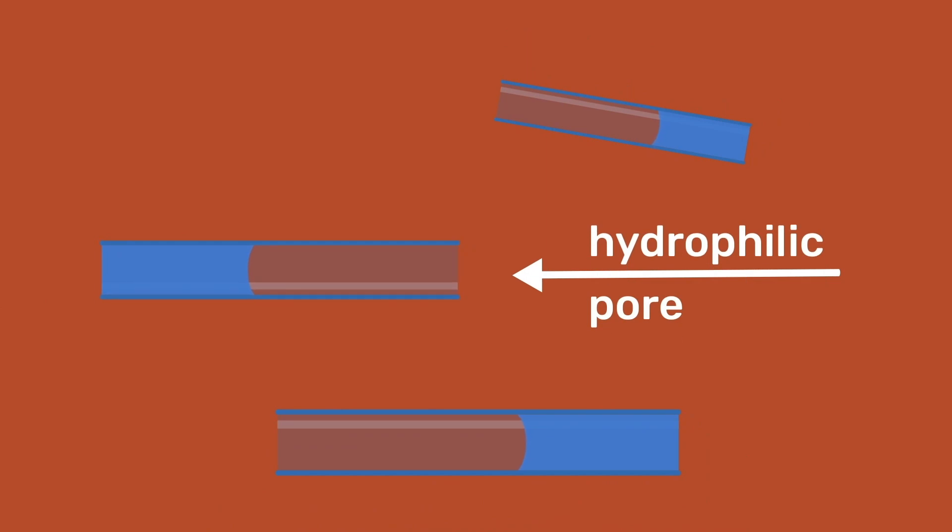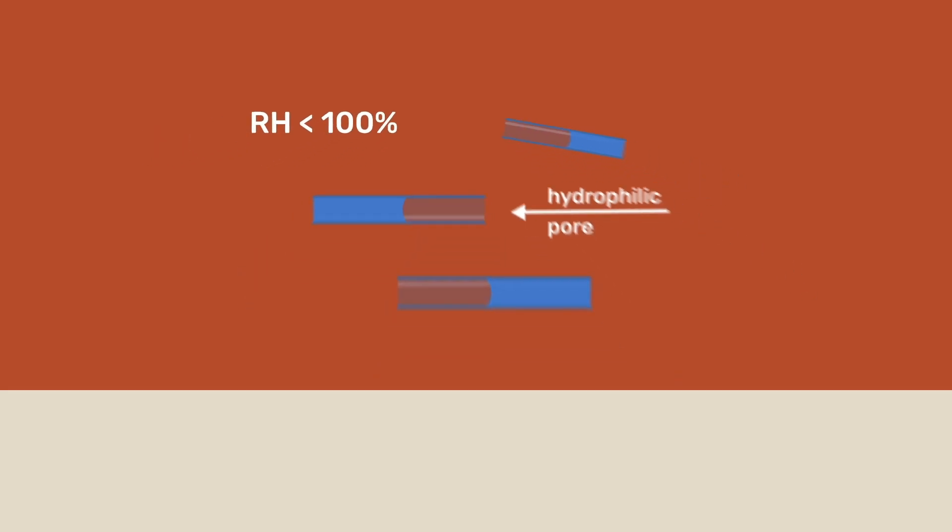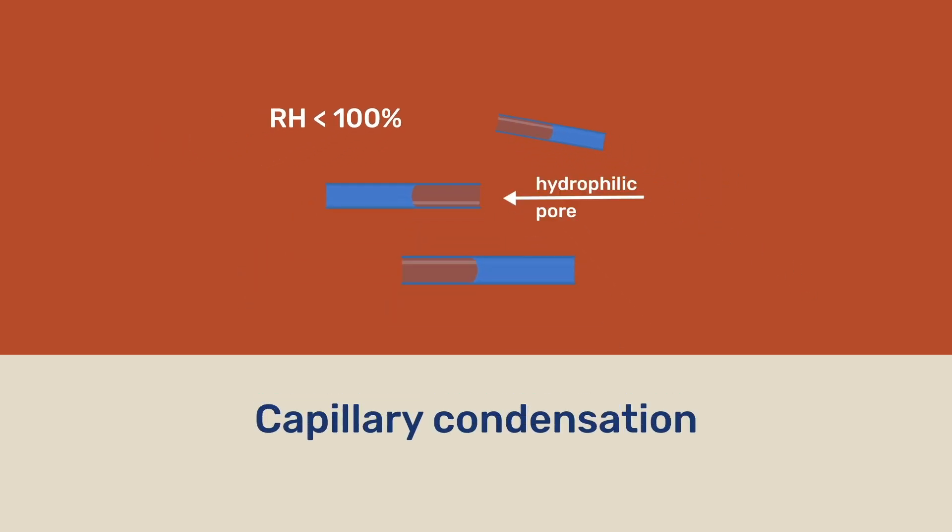In this video, we examine how liquid water can form and remain within hydrophilic porous materials when the air humidity is below 100%. The process allowing this is referred to as capillary condensation.